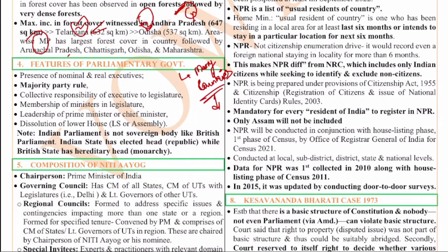In the Indian parliamentary system, we have both nominal and real executive, and importantly both the real and nominal executive are elected. Whereas in the British system, the nominal executive - that is the king - is not elected. In India, the majority party rules, the collective responsibility of the executive to the legislature, membership of ministers in the legislature, and so on and so forth.